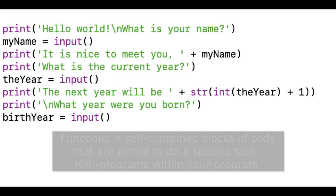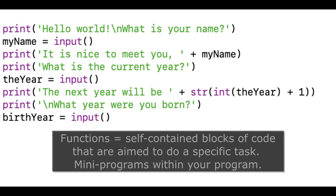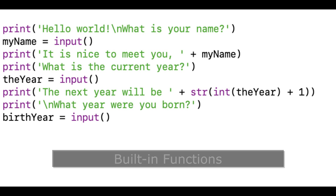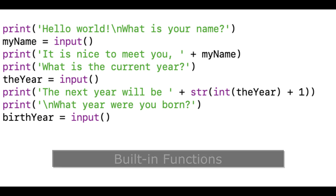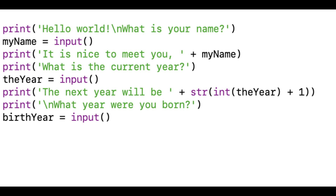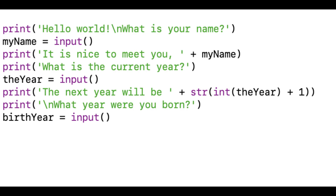Functions can basically be thought of as containing blocks of code aimed to accomplish a certain task. The ones we used here — the print function and the input function — are built-in functions in Python. There are a lot of different built-in functions, but for this program we're only focusing on a few. The print function takes in any string and prints it out to the viewer, displaying everything between the two quotation marks.